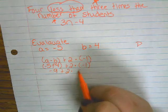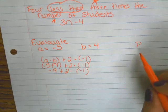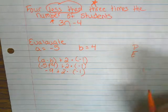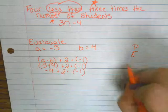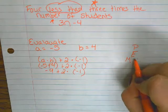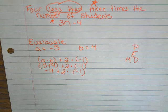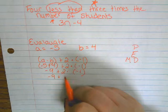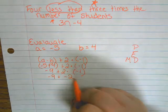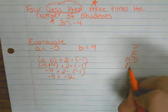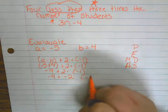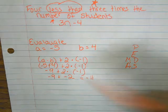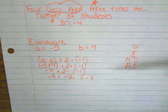What comes after parentheses? Exponents. Do I have any exponents? No. Then what comes next? Multiplication or division, whichever comes first. So what do I have? Two times negative one. Two times negative one gives me negative two. Negative nine plus negative two. Then addition or subtraction, so I get negative 11.